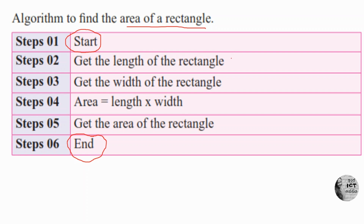Step 2: Get the length of the rectangle. Step 3: Get the width of the rectangle — those are the inputs. Then, Step 4: Area = Length × Width — this is the process. Step 5: Display the area of the rectangle — that is our output. This is the way we write an algorithm.